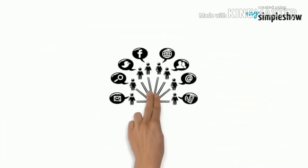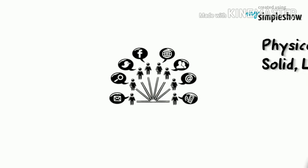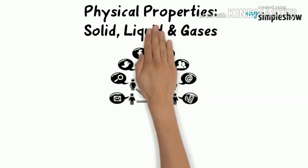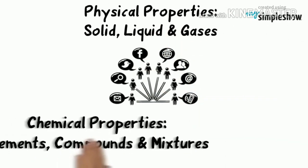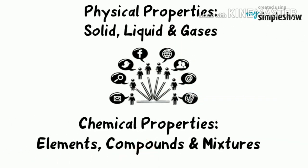Modern-day scientists classified matter in two ways: first, on the basis of its physical properties, and second, on the basis of its chemical properties.